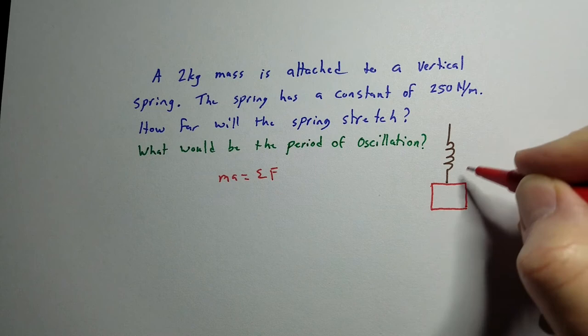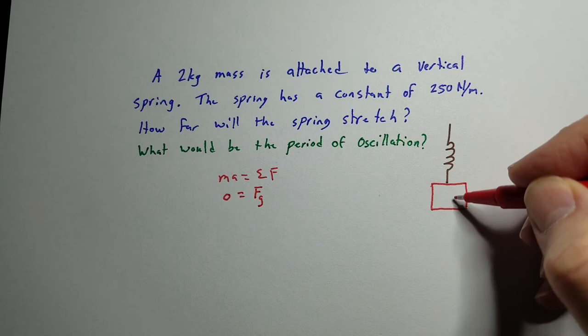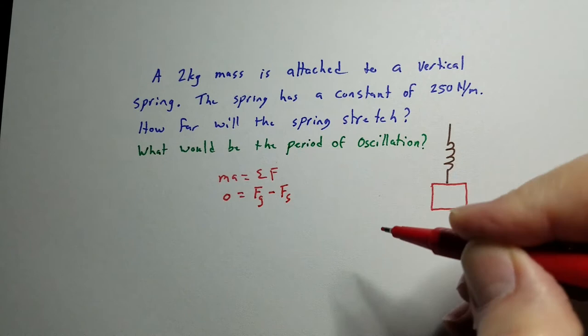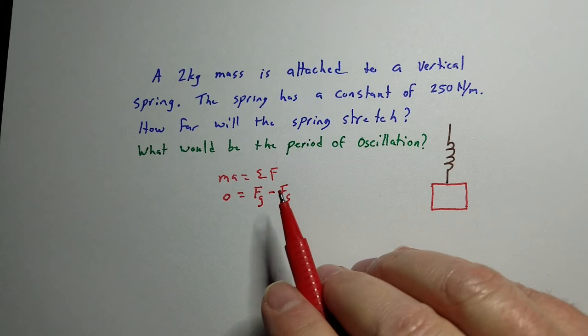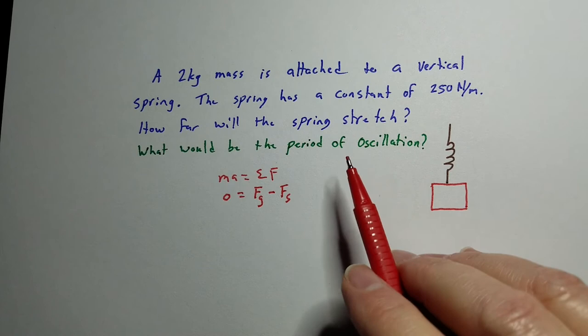then we have ma equals the sum of the forces. Well, since it's just sitting there, we just let it stretch. We're not letting it bounce around or do whatever. The acceleration is zero, so that's zero. And we get the force, which is the weight on the block stretching it, minus the force from the spring. And I put the negative sign there. I know there's a negative sign in the actual equation, but I like to put it there because I know that these two are going to be working against each other. Gravity is acting down and the spring is pulling up.